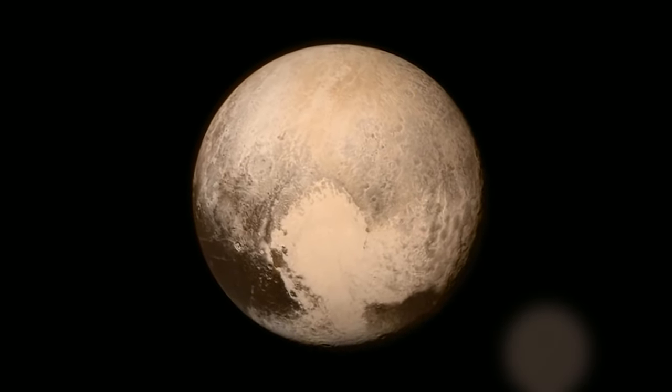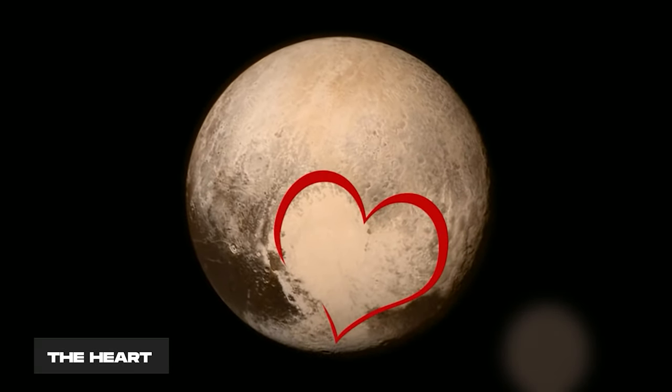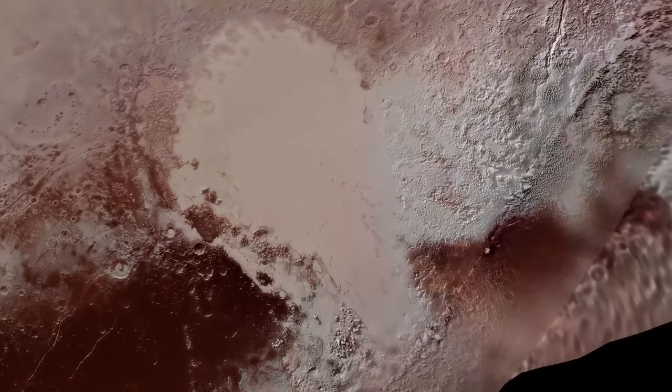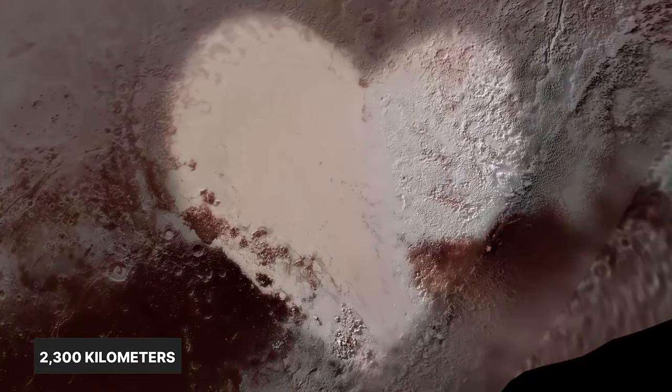This expansive region is situated in the equatorial zone of Pluto and bears a striking resemblance to a heart-shaped outline, which earned it the informal nickname, the heart. Tombaugh Regio spans a sizeable 2,300 kilometers, encompassing roughly a quarter of the celestial body's total area.